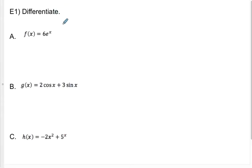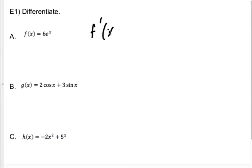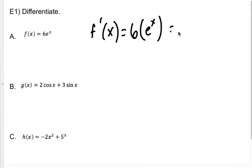So we're going to go ahead and differentiate using the rules that we know. I have a 6 in front of an e to the x. My f prime of x — there's a 6, which is just a multiple, sitting in front of an e to the x. The derivative of e to the x is e to the x, so I just get 6e to the x again. Nothing happened.